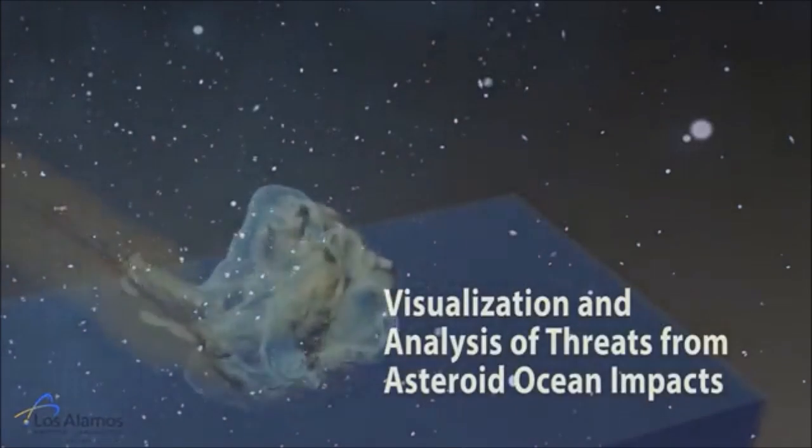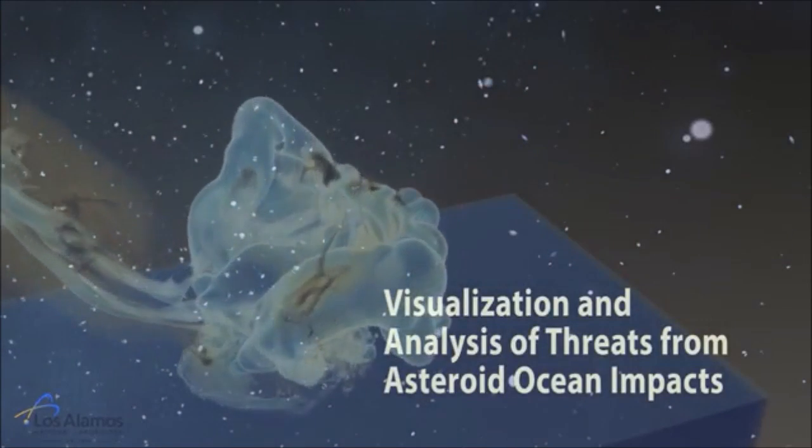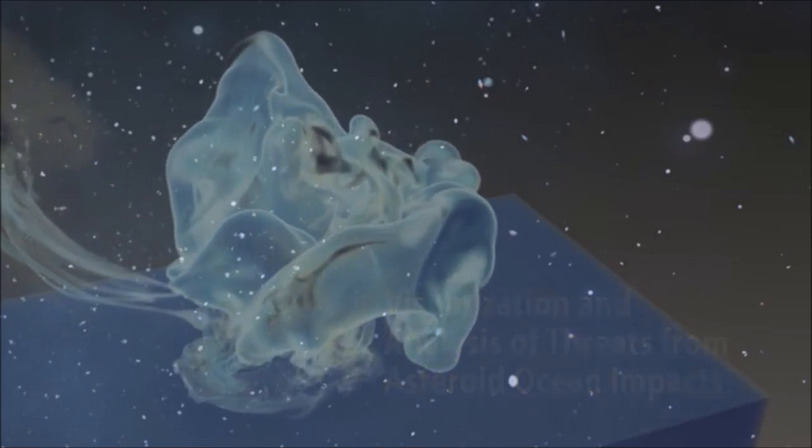NASA is currently tracking 1717 near-Earth objects that are considered potentially hazardous asteroids due to their size and orbits. Approximately 70% of the Earth's surface is covered by oceans, so an asteroid is most likely to impact the water.